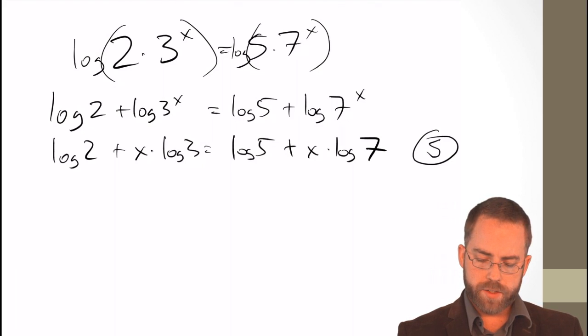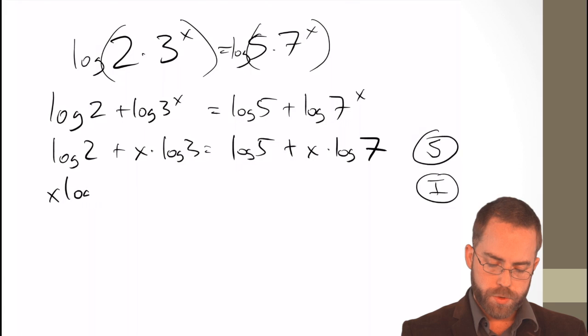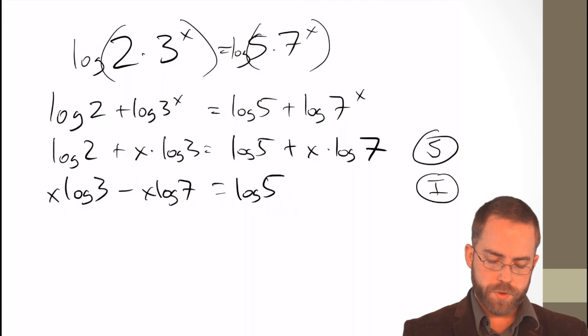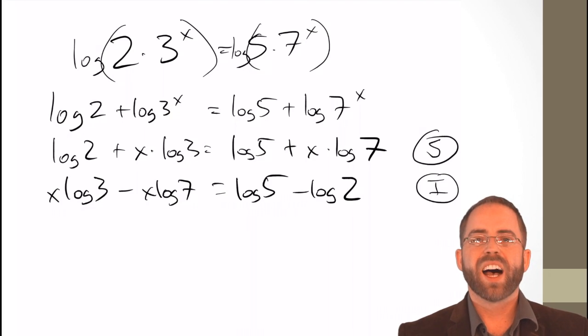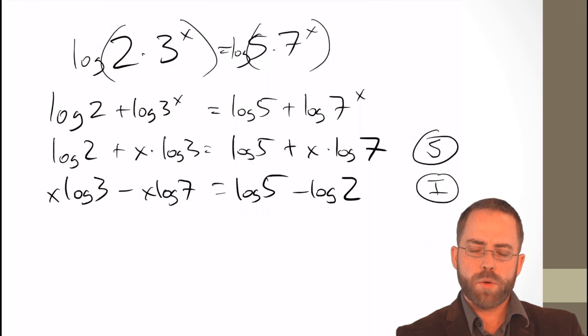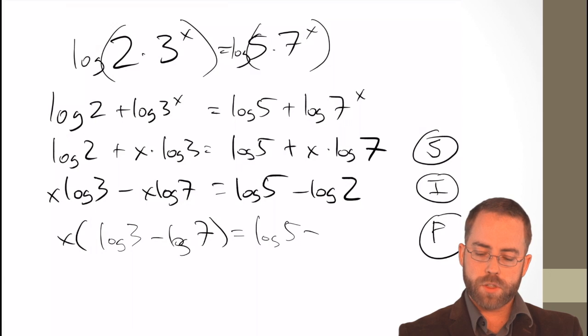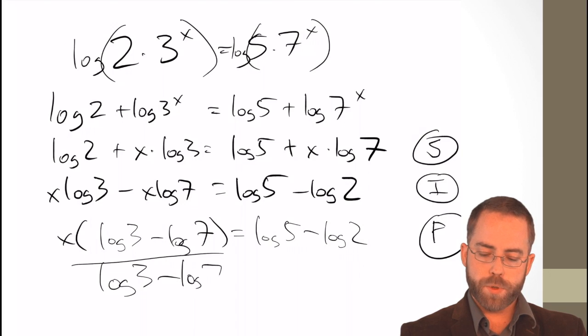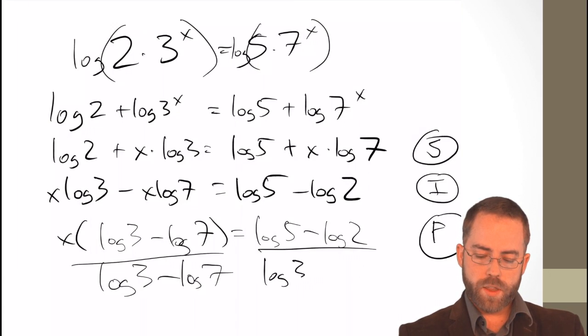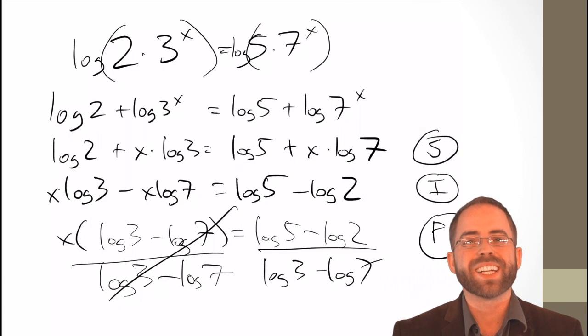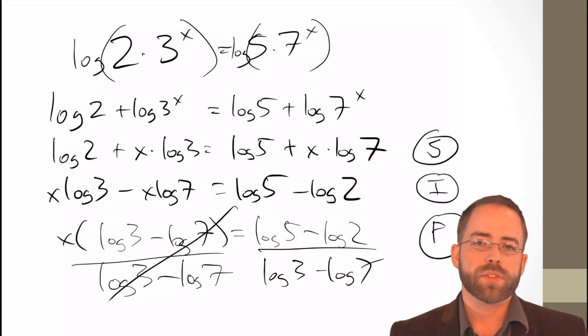And now, I need to isolate everything with an x on the left. Let's pick the left. So, x log 3 was already here, minus x log 7. Log 5 was already over here, so we're subtracting log 2 over. I have successfully isolated my variable that I want. And now, I'm going to factor it out. I've got log 3 minus log 7 equals log 5 minus log 2. So, that is a horrible decimal, but it is an exact answer about what x is equal to.